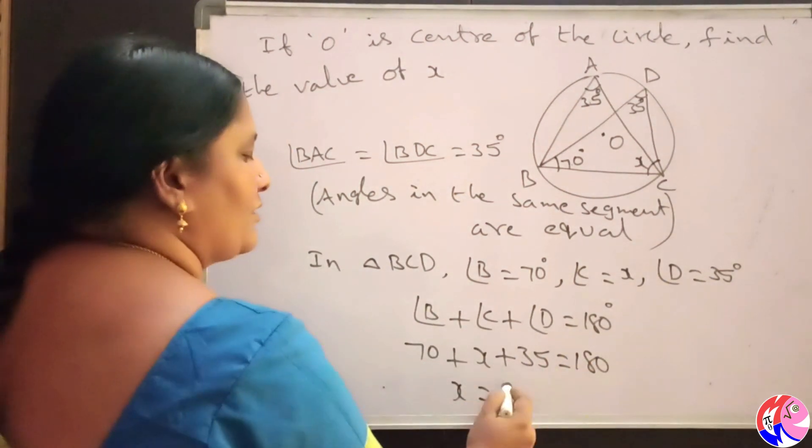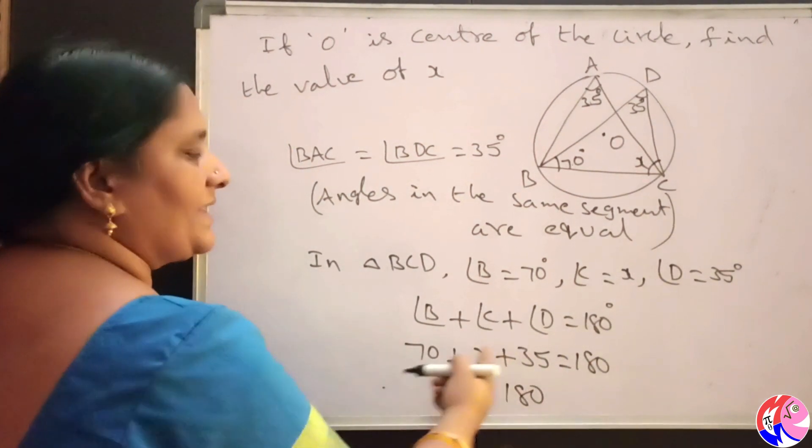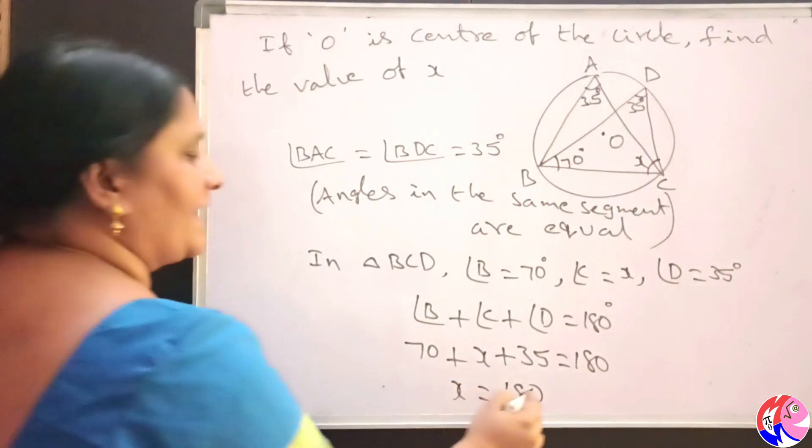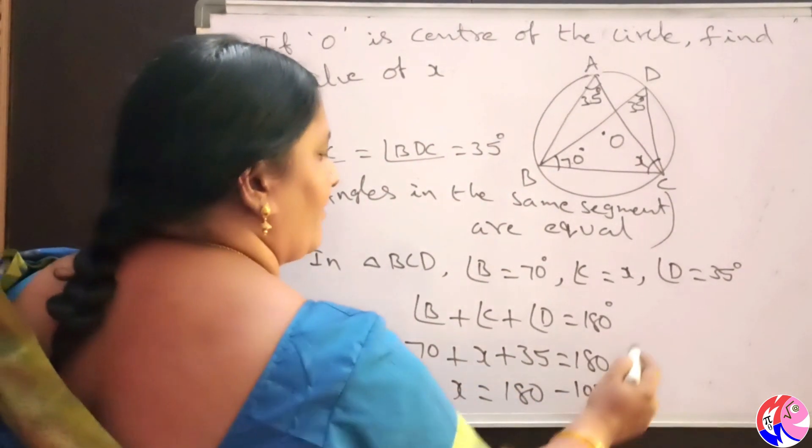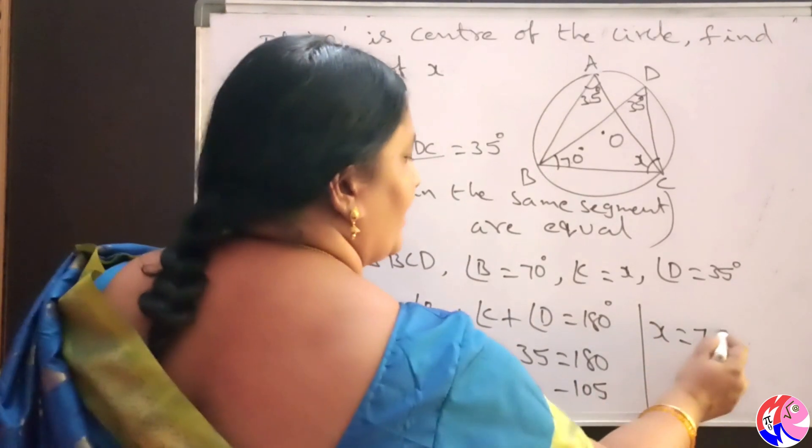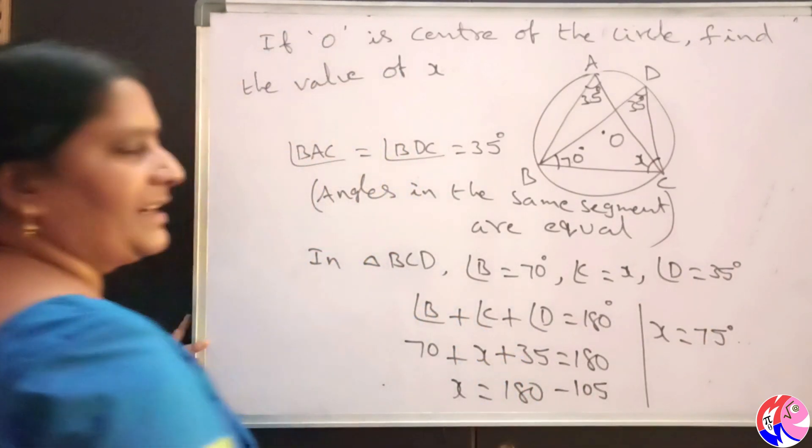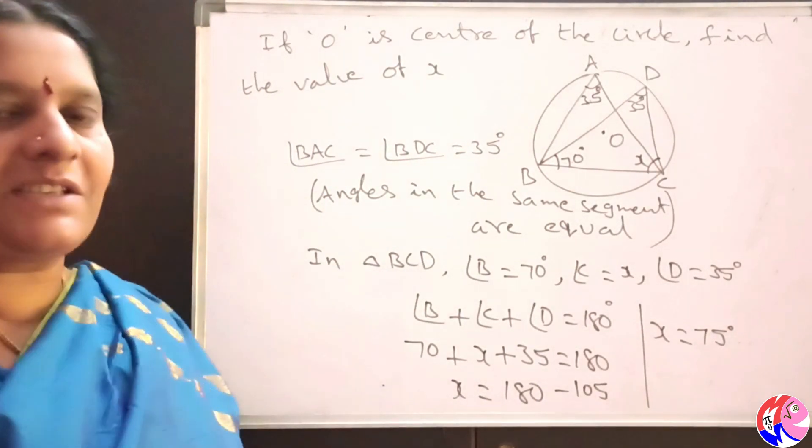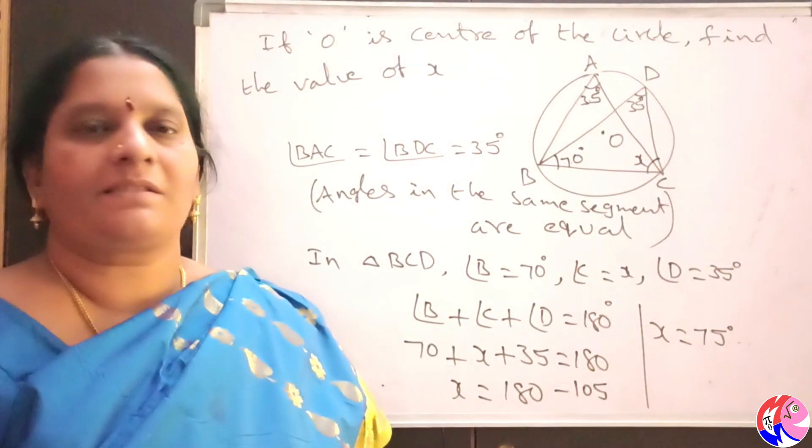Then x is equal to 180, this sum is 105 sent to RHS minus 105. So x is equal to 180 minus 105 which is equal to 75 degrees. So the measure of x is equal to 75 degrees. Thank you so much.